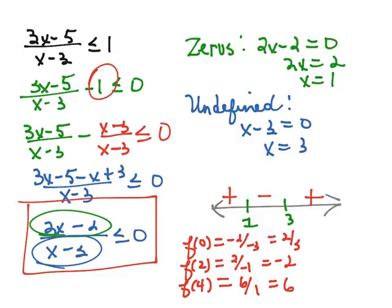And so we are wanting to find the intervals where 2x minus 2 divided by x minus 3 is less than or equal to 0. And that's going to happen in this negative interval.